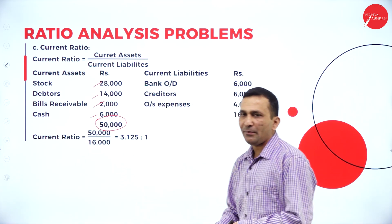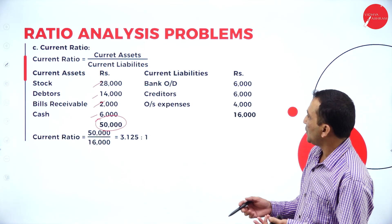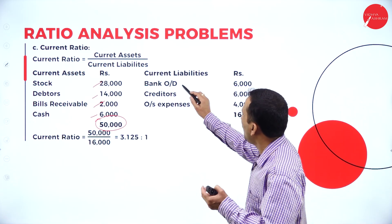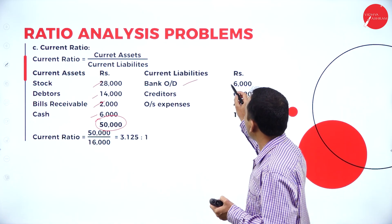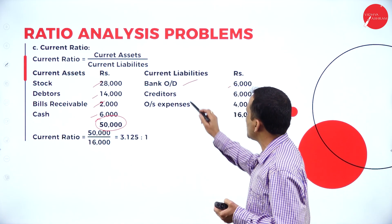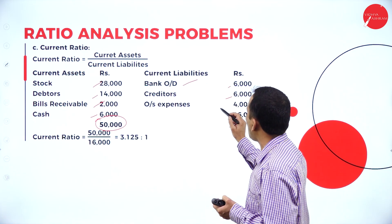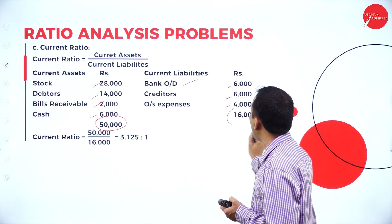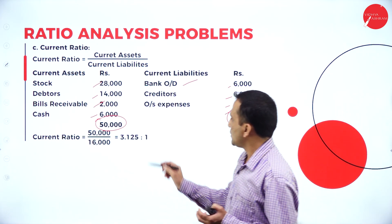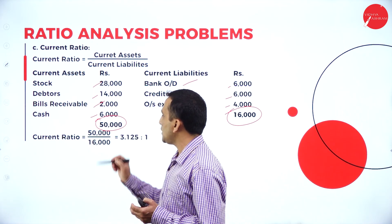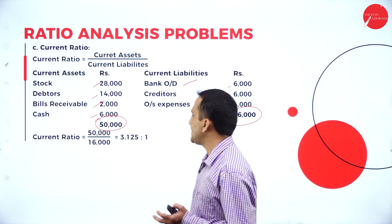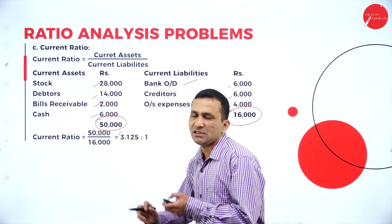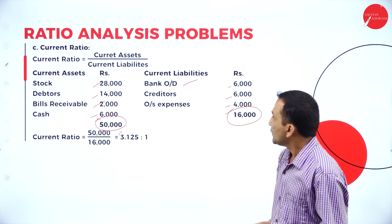On the liability side, three items are clearly specified in the balance sheet: bank overdraft 6,000, creditors 6,000, other outstanding expenses 4,000 — all together 16,000. So 50,000 divided by 16,000 gives 3.125.